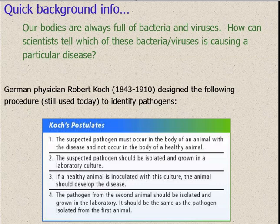Step number two: the suspected pathogen should be isolated and grown in a laboratory culture — that means grown on a petri dish. Step number three: if a healthy animal is then inoculated with this culture, that animal should develop the disease. You take whatever you grew on the petri dish and inject it into a healthy animal; if that animal develops the same disease, you're probably on the right track.